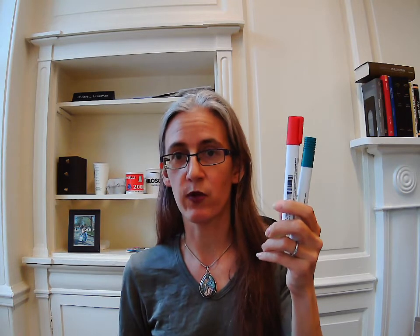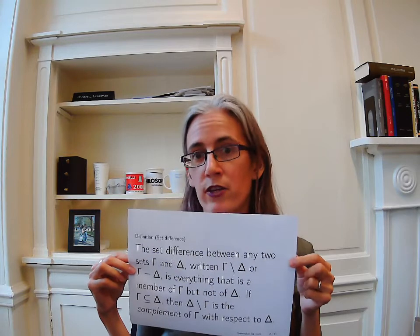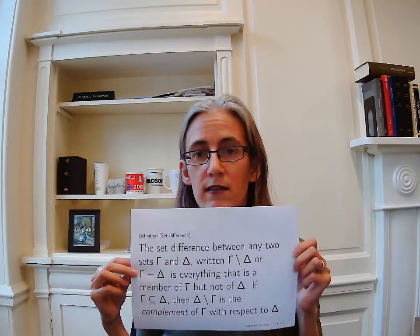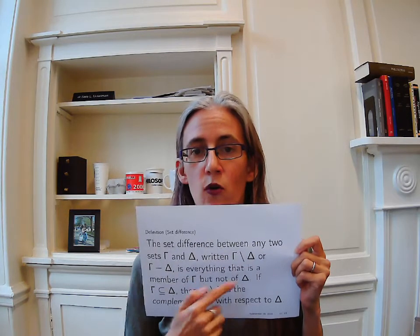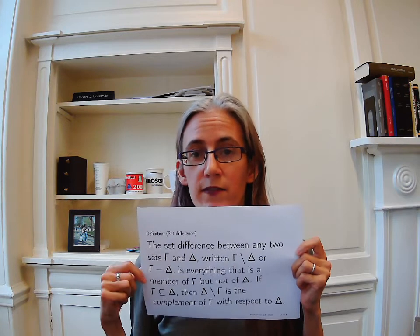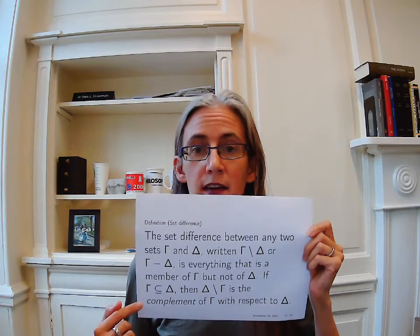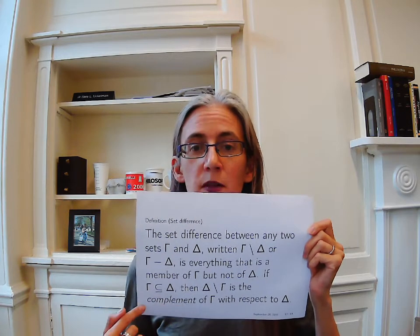So we can take two sets and put them together and form a new set, we can take two sets and say what occurs in both of them, but we can also take two sets and essentially say: what is the difference between the set that contains red, yellow, and green and the set that contains red and green? Well, the answer is yellow, because you take these two and you put them back together and you get your original set back. This is a notion of set difference. The set difference between any two sets, gamma and delta, written either with a slash or with a minus sign, is everything that is a member of gamma and not a member of delta.